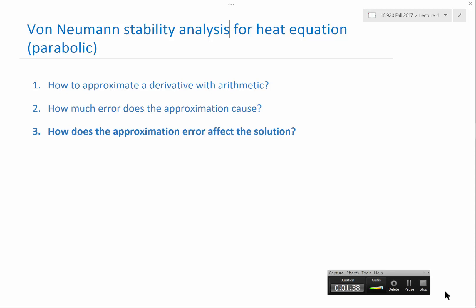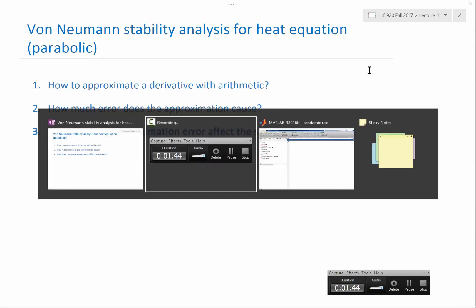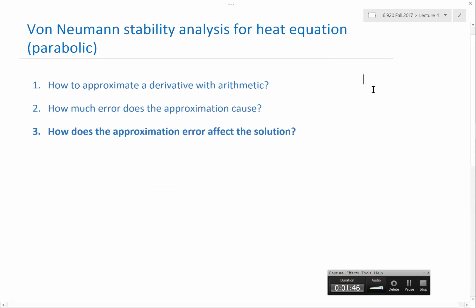So then we also looked at how the approximation error affects the solution. That is related to stability. If a numerical method is stable, the error in the approximation is going to contribute to the solution error, but the contribution is not going to exponentially amplify. It actually exponentially decays.